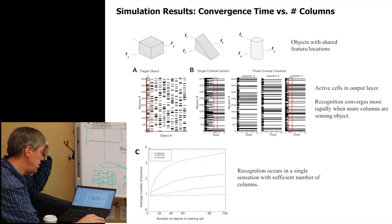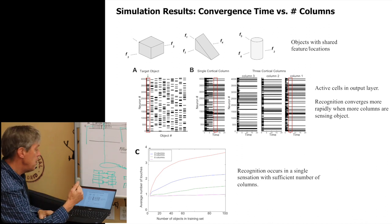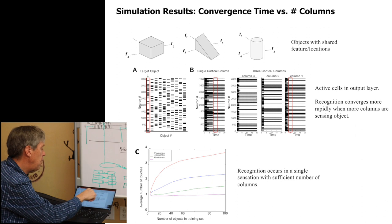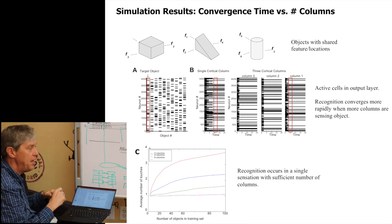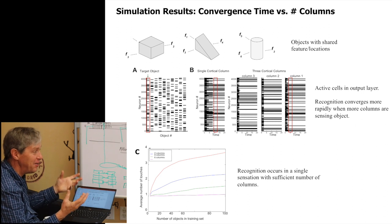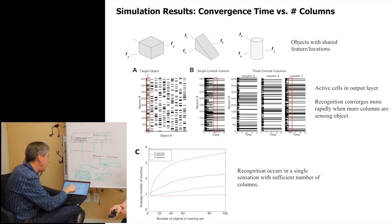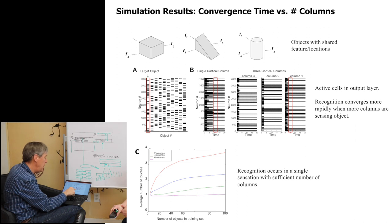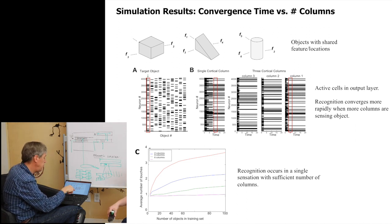We've done, just to show you this, this slide called simulation results, convergence time versus number of columns. This is just showing that when we model these things, we can model this convergence problem, this issue. So I don't know if I want to go through this in detail, but if you look at the section at the top of this diagram, we have, we've created a bunch of virtual objects. These are simulated objects that have features at locations. And we've designed them so that they're similar enough that you can't distinguish them very easily. You have to touch multiple places on them to distinguish them. They have similar features in, any particular feature you touch on location is not going to be unique.